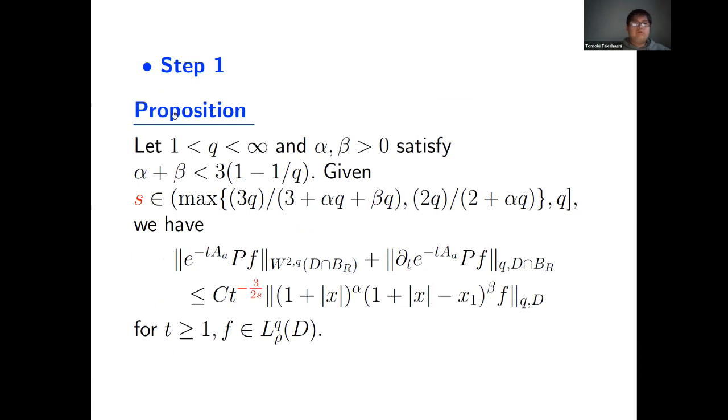Finally, we provide step 1. This is an estimate proposition. We now consider both alpha and beta positive. Given s, which can be less than q, then we have the following estimate with the rate minus 3 over 2s. If alpha equal beta equal zero, then Kobayashi-Shibata derived this estimate with s equal q. But this proposition implies that you can get a better decay rate in weighted Lebesgue space. And this proposition implies that the range of exponents for gradient estimate can be enlarged. Okay. I stop here. Thank you for your attention.